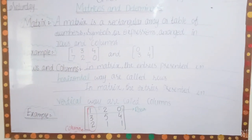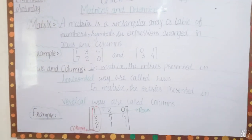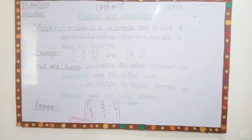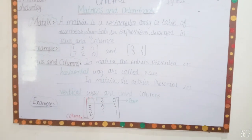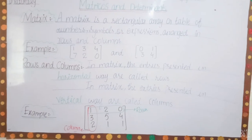The entries are presented in a horizontal way and called rows. If this is to count for rows, the entries are presented in a vertical way and called columns.